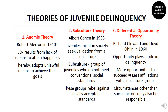The next topic is the theories of juvenile delinquency. The first theory is anomie theory, first presented in the 1940s by Robert Merton. According to Merton, juvenile delinquency occurs because juveniles do not have the means to attain their goals — their goals are unattainable within legal means.